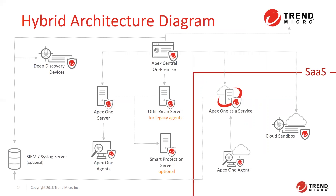In a hybrid architecture, you'd have Apex Central on-premise connecting to network devices within your network — for example, Deep Discovery devices — and then connecting to your Apex One server. If you have legacy agents, you can still maintain an Office Scan server temporarily while you migrate, and connect that to your Apex Central on-premise. On the SaaS side, you can connect Apex One as a service into your Apex Central on-premise, managing everything from one single point.